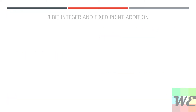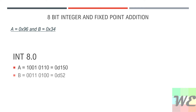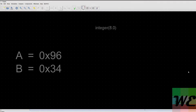We're going to be working on some integer and fixed-point addition using 8 bits. With A equal to 0x96 and B equal to 0x34, using integers, A is equal to 150 in decimal and B is equal to 52. When we add them, we get decimal 202. Now we're going to do this example using both integer and then fixed-point notation — and integer is fixed-point, just 8.0 fixed-point.